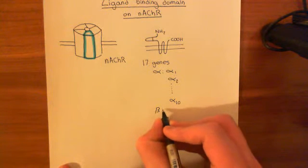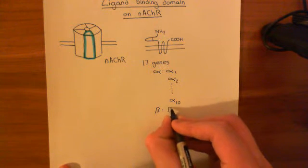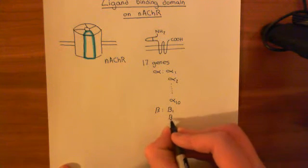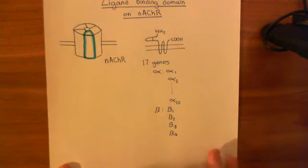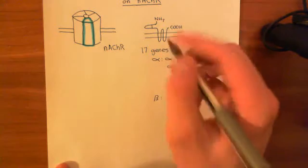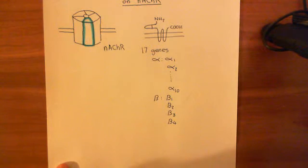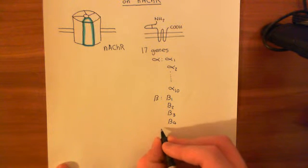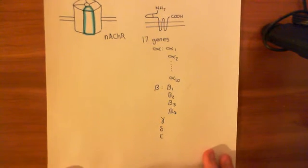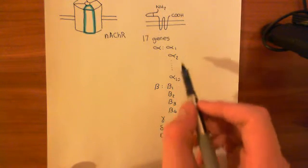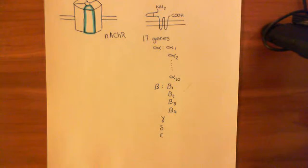Then we have the beta family, which contains four genes: beta-1, beta-2, beta-3, and beta-4 — four genes encoding separate, slightly different sequence polypeptides which can all function as one-fifth of a nicotinic acetylcholine receptor. Finally, you have the gamma, delta, and epsilon genes, which aren't families — those are just single genes. Counting all of these up: 10 plus 4 makes 14, plus gamma, delta, epsilon — that's the 17 genes.